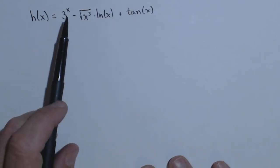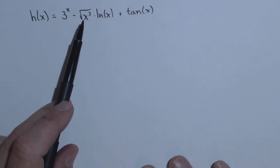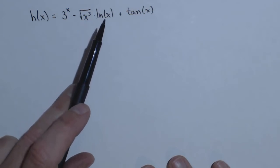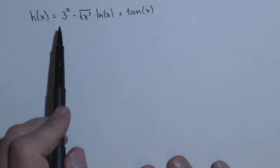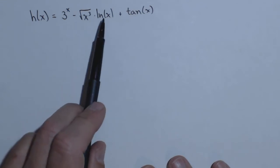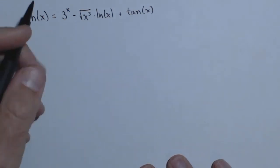We're going to take the derivative of h(x), which is 3^x times square root of x cubed times ln(x) plus tan(x). We've got an exponential function, a product rule in the middle, and a trig function.